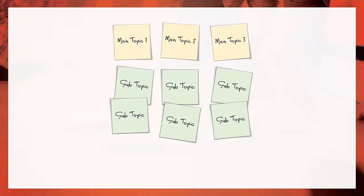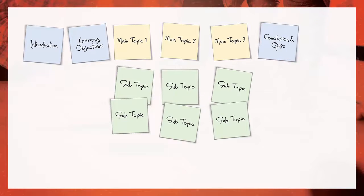Are you going to have an introduction slide? If so, add a sticky note for it at the top. Perhaps a slide to outline the learning objectives? Add a sticky note for that too. A final exam and conclusion at the end? Add those as well. The point here is to start creating a map or outline of how your course will be organized.